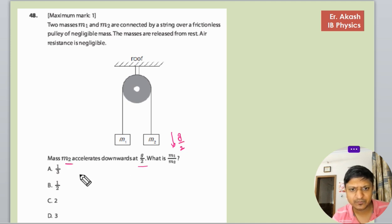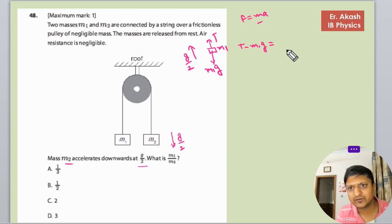We have to find the value of M1 upon M2. First, this block M1 is going upwards. The forces are tension T and M1·g, and the acceleration is g/2. So we write T minus M1·g equals M1 times acceleration, which is M1·(g/2).